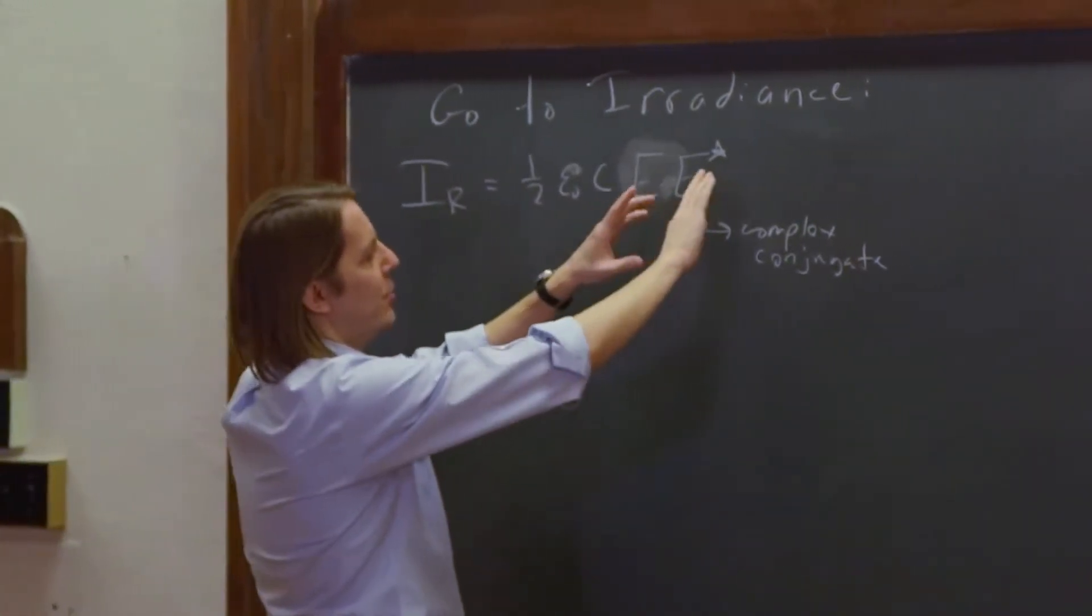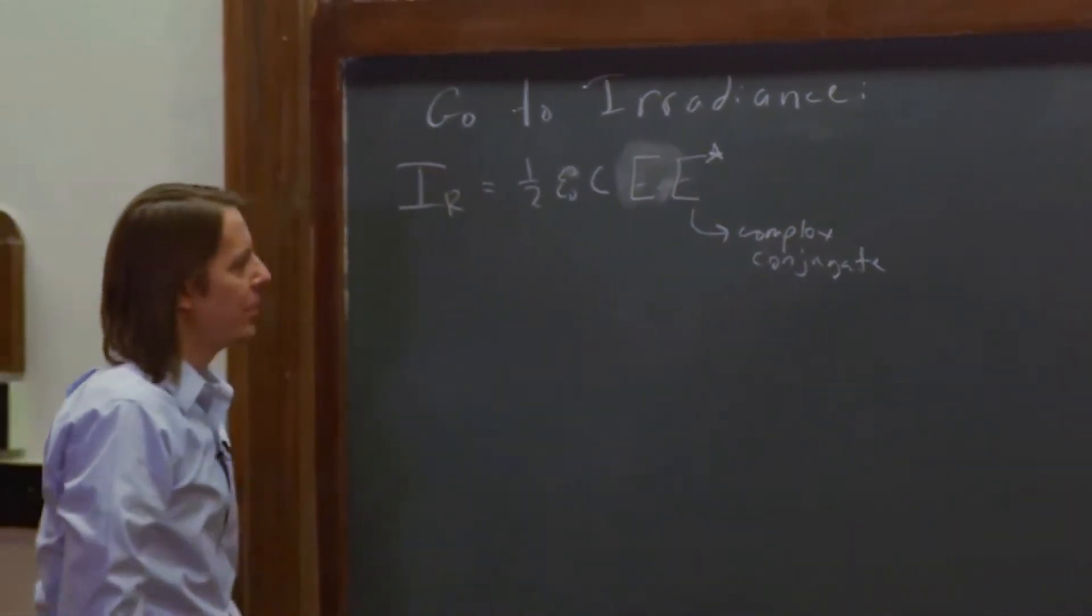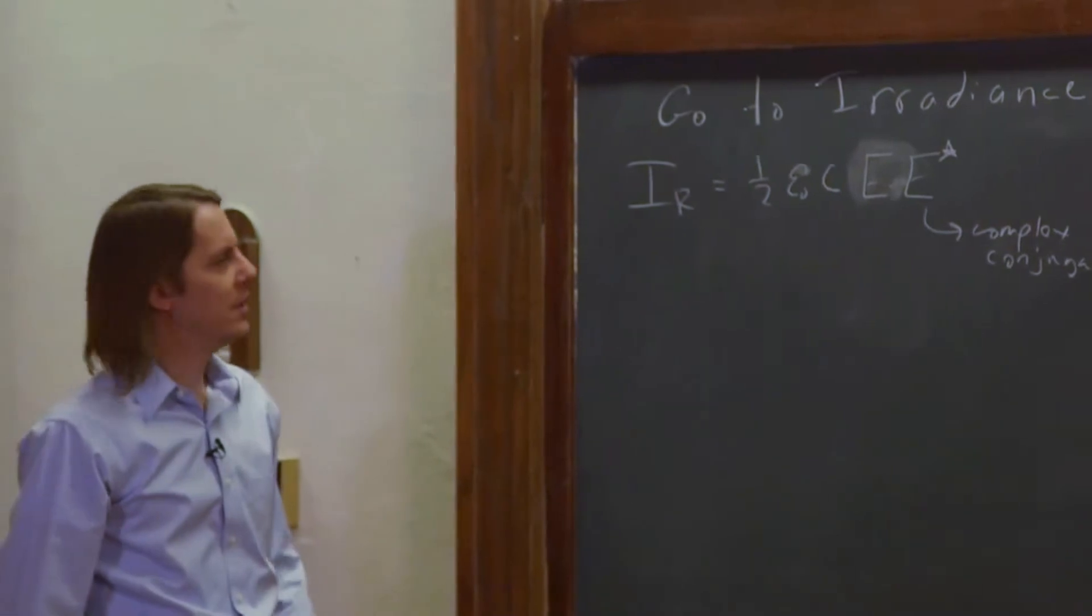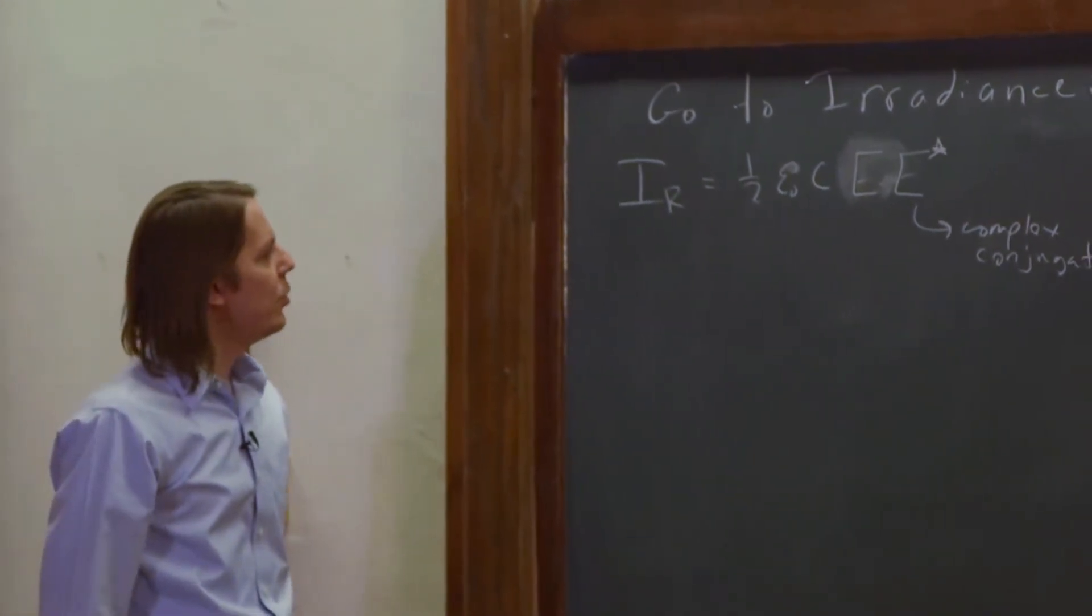And also, before when I wrote it as E naught, then we needed the cosine squared. I didn't write that part. But anyway, this is what you would write if you're doing it complex. So we say, let's do that then.